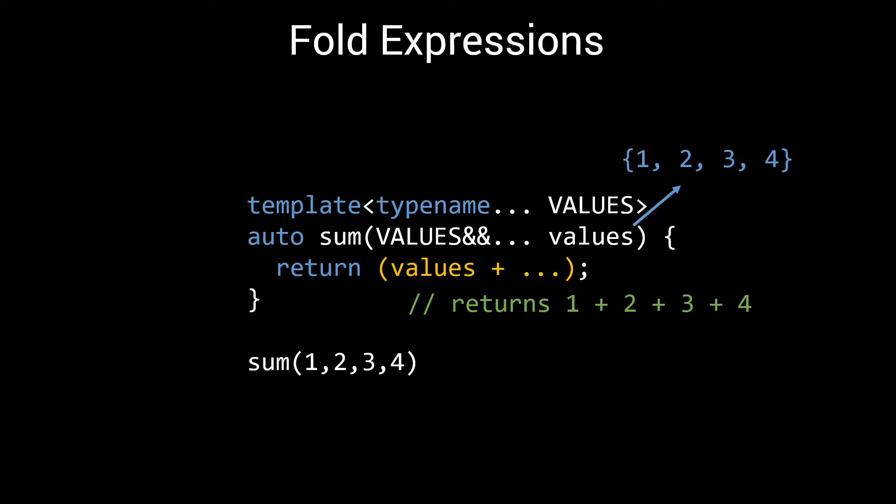This is an example of a unary fold, as the operator, in this case plus, is written only once. To prevent an error when passing an empty parameter pack, I can turn it into a binary fold by adding an initial value, like this.